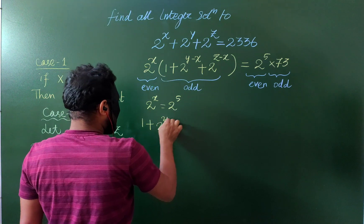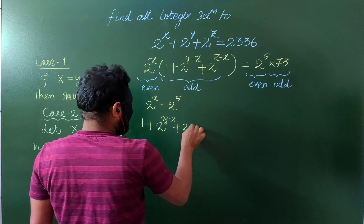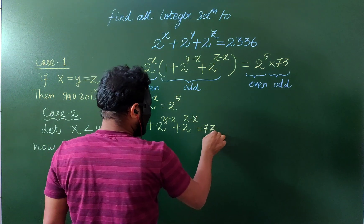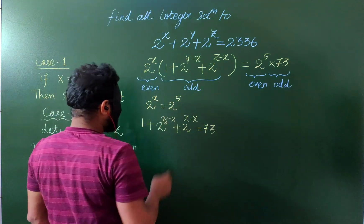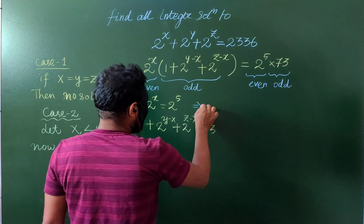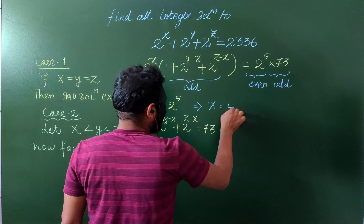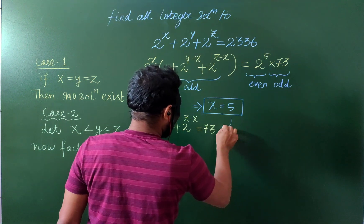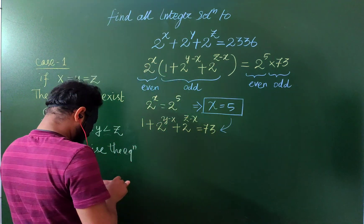And 1 plus 2^(y-x) plus 2^(z-x) equals 73. From here we can say that x equals 5, and then using this in the equation we get 2^(y-5) plus 2^(z-5) equals 72.